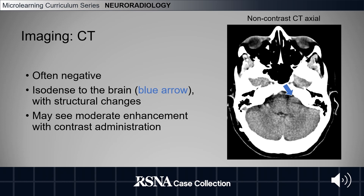The region, which is noted by the blue arrow, is isodense to the brain, and you may see some structural changes depending on the size of the neoplasm. You also may see moderate enhancement with contrast administration.